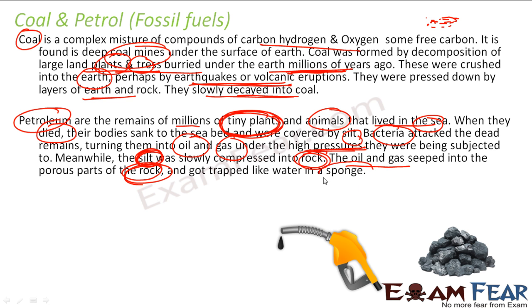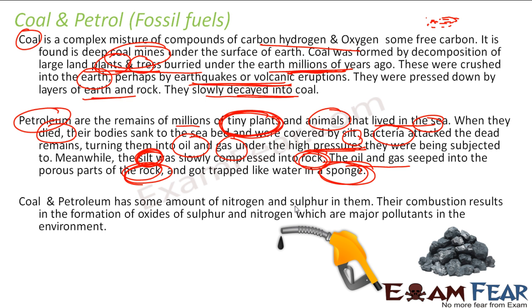They got trapped in the rock — the way water is absorbed in a sponge, similarly the oil is trapped in the rock. We have a process where we extract the oil from there. Also note that coal and petrol both have some amount of nitrogen and sulfur in them, and this is the reason we have pollution — because their combustion results in the formation of sulfur oxides and nitrogen oxides.